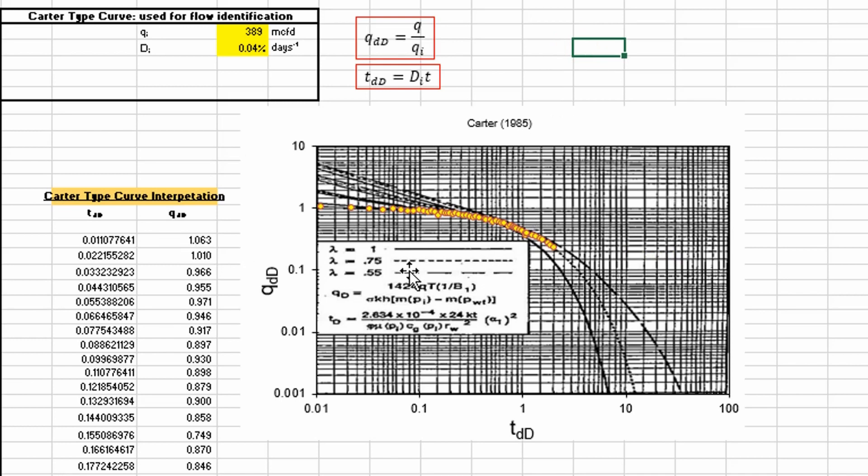But that's it, guys. That's what the Carter type curve does is it helps us identify the flow regime and validate the model, the decline curve model or interpretation that we used. And so this is real critical to any analysis because these decline curve interpretations we did, they don't tell you what type of flow regime there is. So you have to go dig a little bit deeper and find out what you got, and you can do that with the Carter type curve.